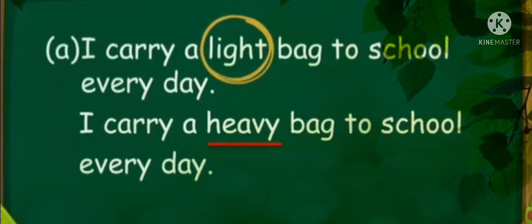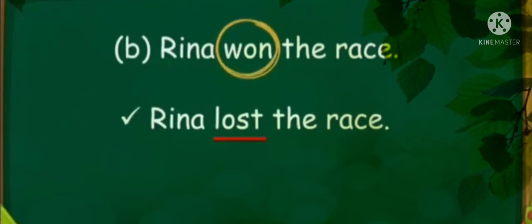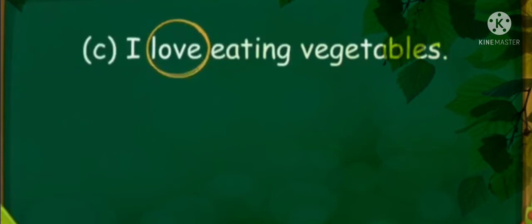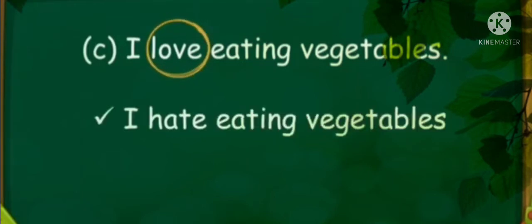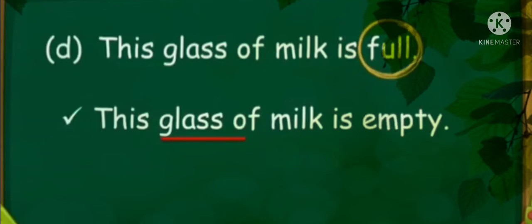Like this you have to write the opposite. We will see the next examples. 'Rina won the race' — the opposite of 'won' is 'lost,' so: 'Rina lost the race.' 'I love eating vegetables' — the opposite of 'love' is 'hate,' so: 'I hate eating vegetables.' 'This glass of milk is full' — opposite of 'full' is 'empty,' so: 'This glass of milk is empty.'